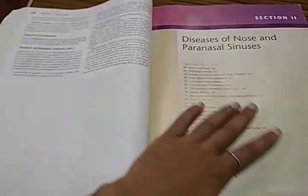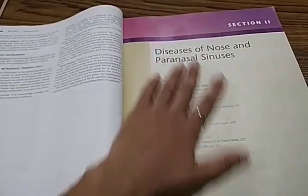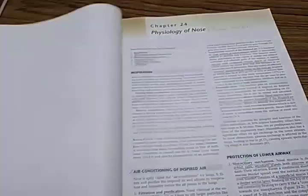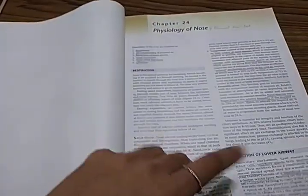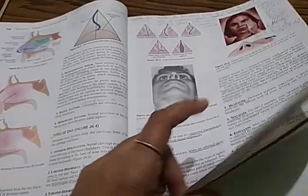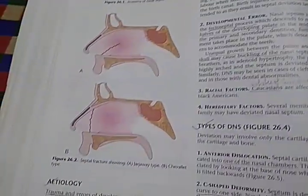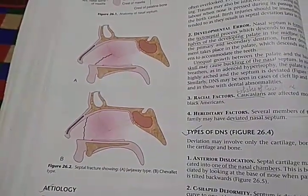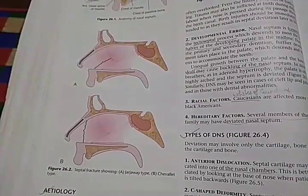We have reached the nose section now. Physiology and anatomy of the nose, with cadaveric images as well. So anatomy of nose and paranasal sinuses. Then nasal septal fracture — Jarjavay fracture and Chevallet fracture are covered.